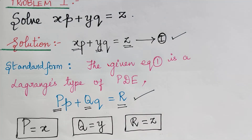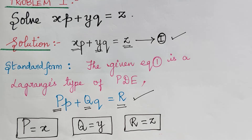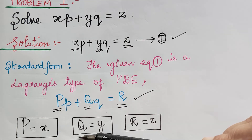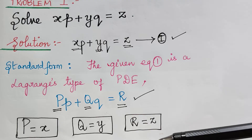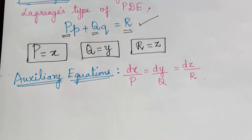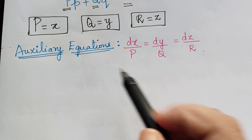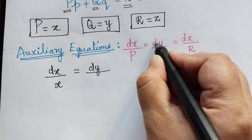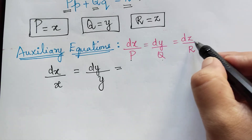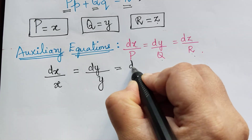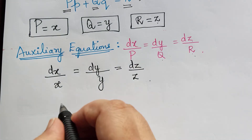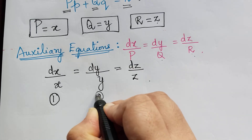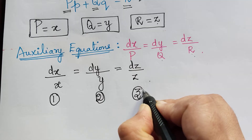Comparing the given equation xp + yq = z with the standard form, we confirm capital P = x, capital Q = y, and capital R = z. The next step is to form the auxiliary equation. The auxiliary equation is dx/P = dy/Q = dz/R. Substituting, we get dx/x = dy/y = dz/z. We mark these as equations 1, 2, and 3 respectively.